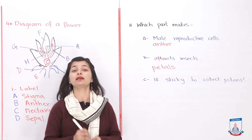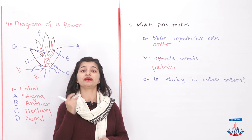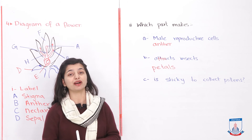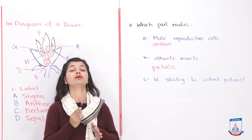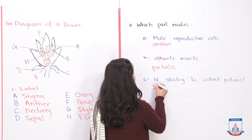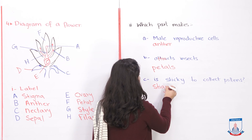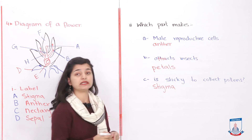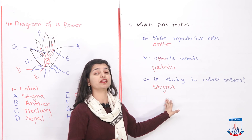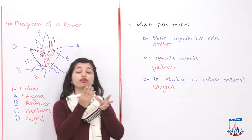Third question: which part is sticky to collect pollens? This is a bit tricky — the most sticky part in a flower is the stigma. Why? Because it has to grasp pollen; the pollen sticks to it and then travels down through the pollen tube.